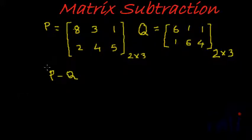So very similar to addition, we need to find out if the orders are the same. If you look at these two given matrices, they are both of the order 2 by 3. Once this is confirmed, the next step is just to subtract corresponding elements from each of the matrices from the other.